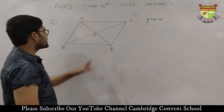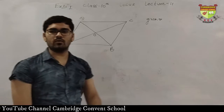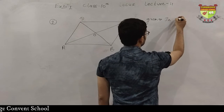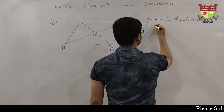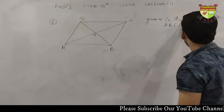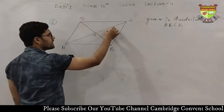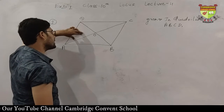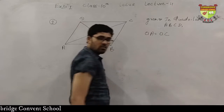Firstly, we have to write what is given to us. We have the quadrilateral ABCD in which the diagonals bisect each other. We will write this in mathematical form. In quadrilateral ABCD, diagonals bisect each other. Bisect means divided into two equal parts, so from diagonal AC: OA is equal to OC.